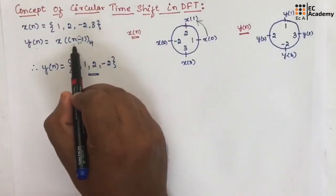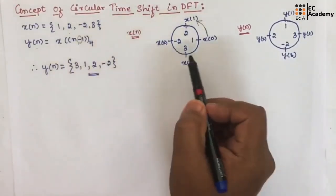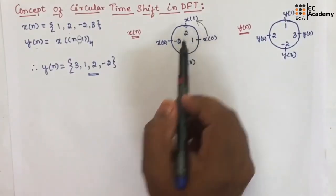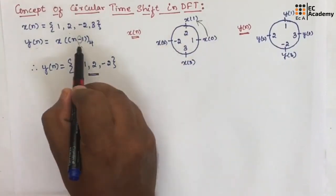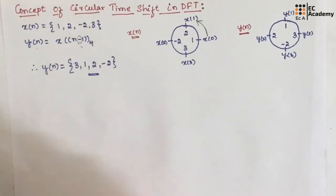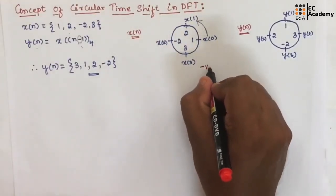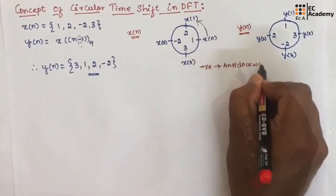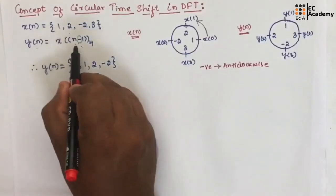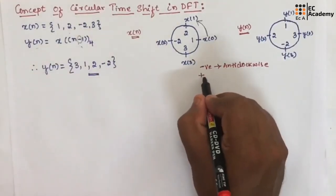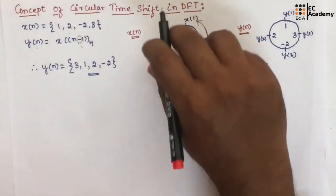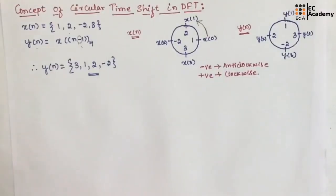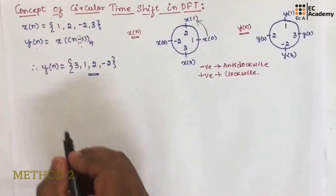Now, if they ask you to find x of (n minus 2), in that case we need to rotate x of n in the anti-clockwise direction for 2 steps. So if they give a negative sign in the equation, you need to rotate anti-clockwise. If they give x of (n plus 1), for a positive sign, we need to rotate x of n in the clockwise direction. You need to remember this concept. We can also use one more method to analyze this.